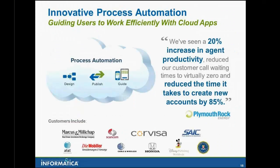The final area is process automation. Our process automation solution for Salesforce is called Informatica Cloud Extend, and it helps Salesforce users work more efficiently with the application. For example, Plymouth Rock Energy's call center agents used Cloud Extend to reduce the time to create new account objects and all the associated data records by 85%. This meant they can effectively help more customers in a day. The secret to this success is that Cloud Extend models processes as wizard-like guides that run on a desktop browser or mobile device like tablets or cell phones. There's no programming required, so business people can create their own process guides, and it works with both standard and custom Salesforce objects.